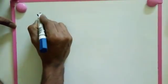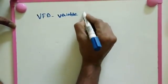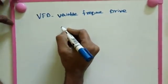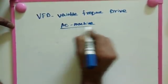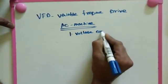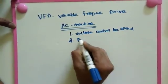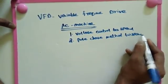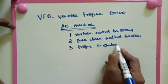Hi guys, today we are going to see VFD. VFD means variable frequency drive. We are going to look at speed control of an AC machine. We have three methods for controlling AC machine speed: first is voltage control, second is pole changing method, and third is frequency control.